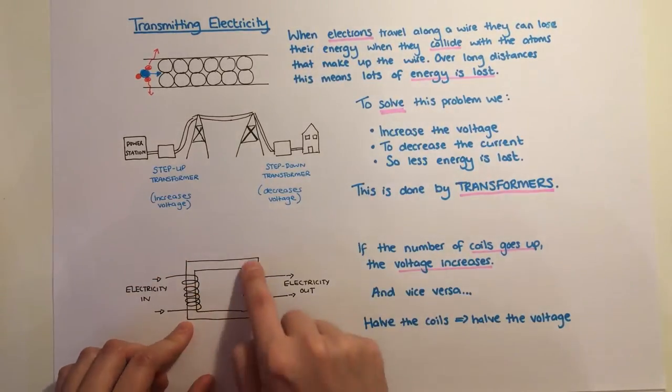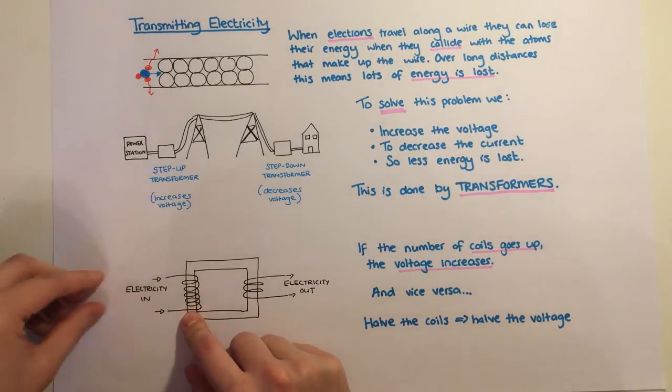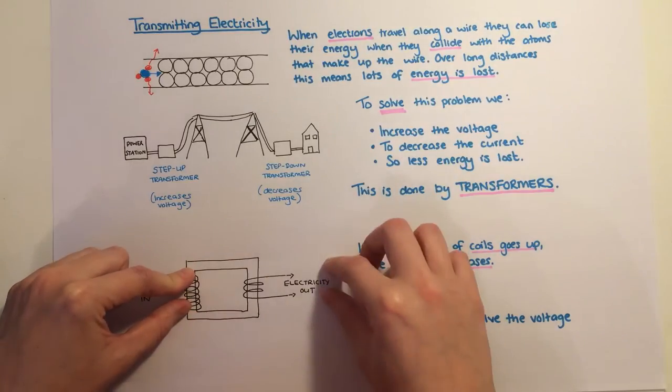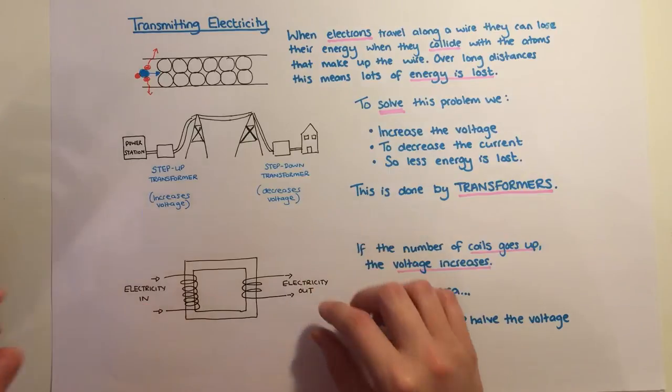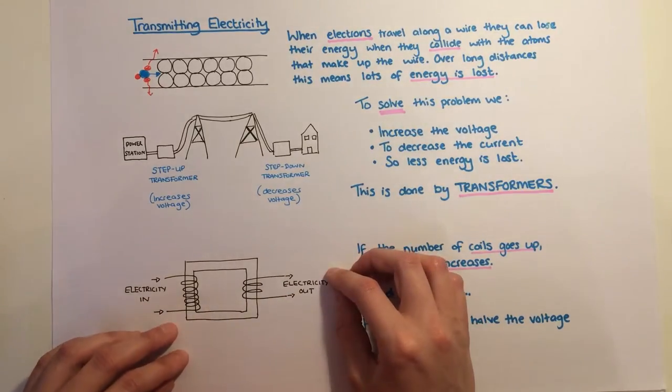A transformer is simply a square core of iron, and we wrap wires around one side which have a current passing through them. Completely separately, you wrap wires around another side, and as if by magic, you get electricity coming out of that side.